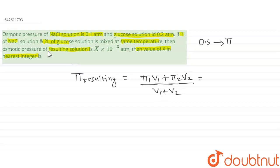π₁ is the osmotic pressure of NaCl and π₂ is of glucose. So π₁ is 0.1 into volume of NaCl, that is they have given one liter, right, plus...